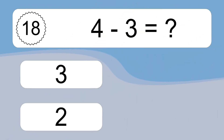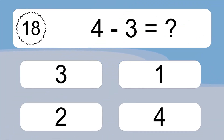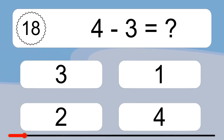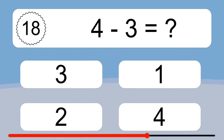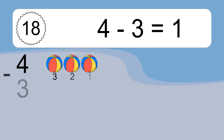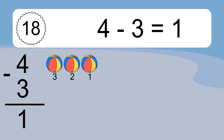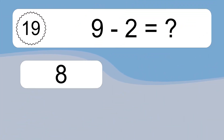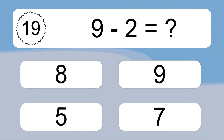4 minus 3 equals what? 4 minus 3 equals 1. Let's count it: 3, 2, 1.